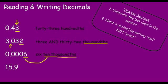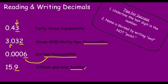Finally, for this last one, we have a whole fifteen. And again, we say "and" for the decimal, and then nine-tenths because the nine is in the tenths place. So you are looking at the place value of that last digit, and that is how you read and write decimal numbers.